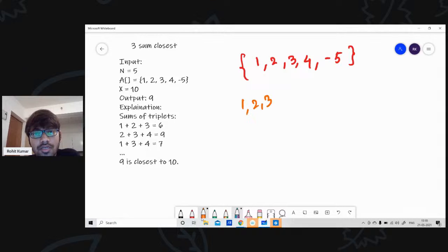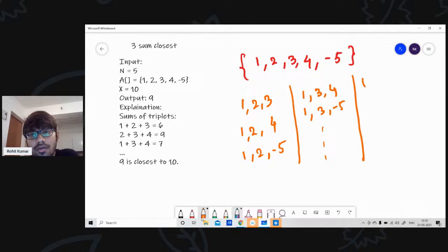Like we can take 1, 2, 3. We can take 1, 2, 4. We can take 1, 2, minus 5. Similarly, we can take 1, 3, 4. We can take 1, 3, minus 5, and we can take 1, 4, minus 5 and so on. There will be many. So brute force will be to generate all the possible triplets and check the closest one. That's it, as simple as that. Let me show you the pseudo code for that.